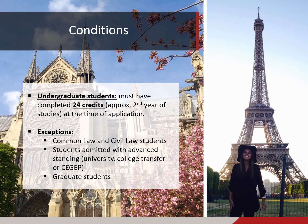You need to have obtained a minimum of 24 credits at the time of application. There are a few exceptions: students from the common law or civil law section are eligible to apply as of their first year because they already completed some university before being admitted. If you transferred from another university or college and received at least 24 credits in equivalencies, or if you received equivalency credits from courses done at the CEGEP level, you are eligible to apply as of your first year.